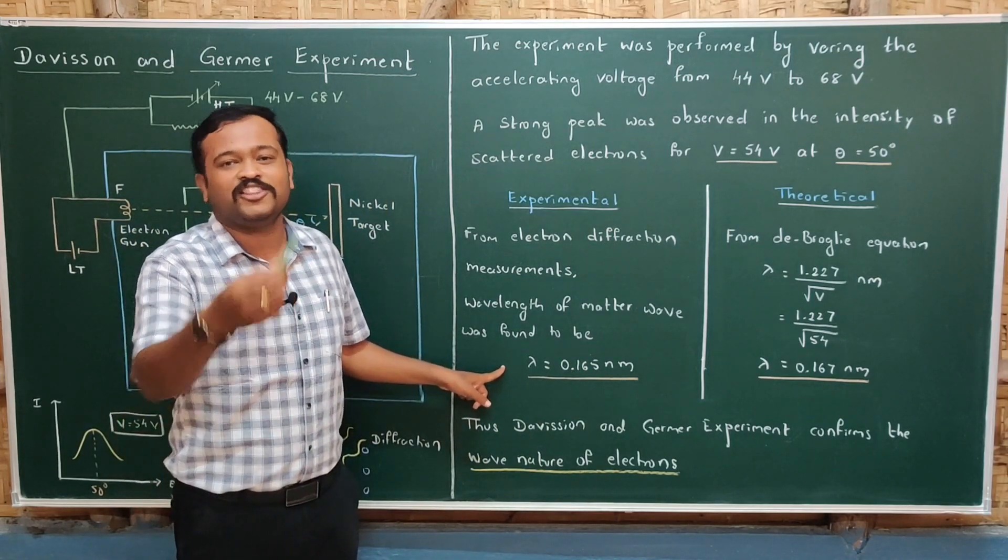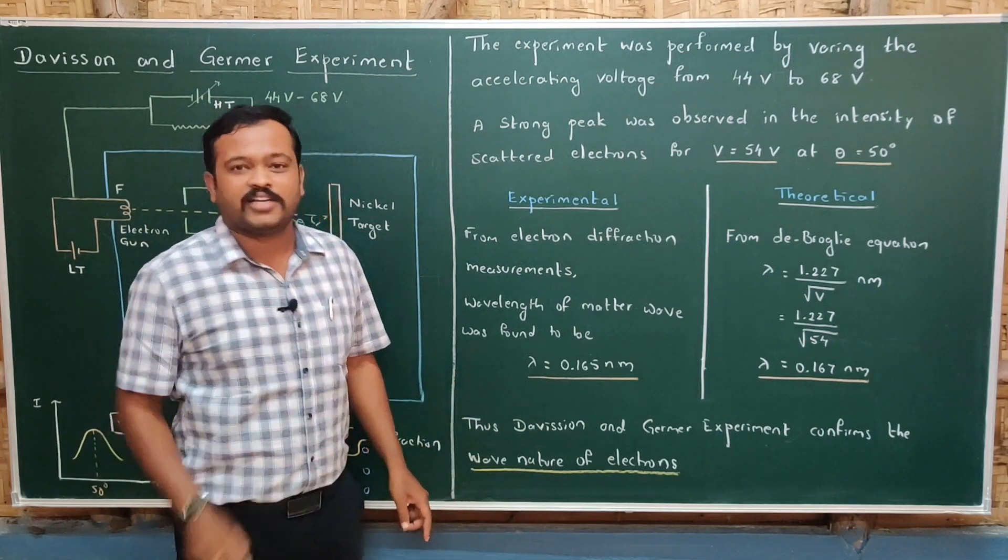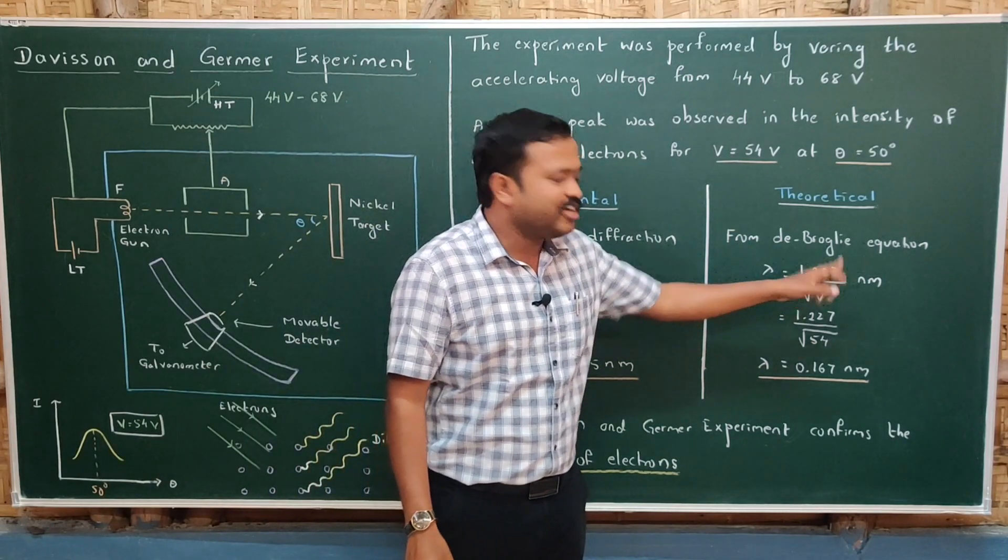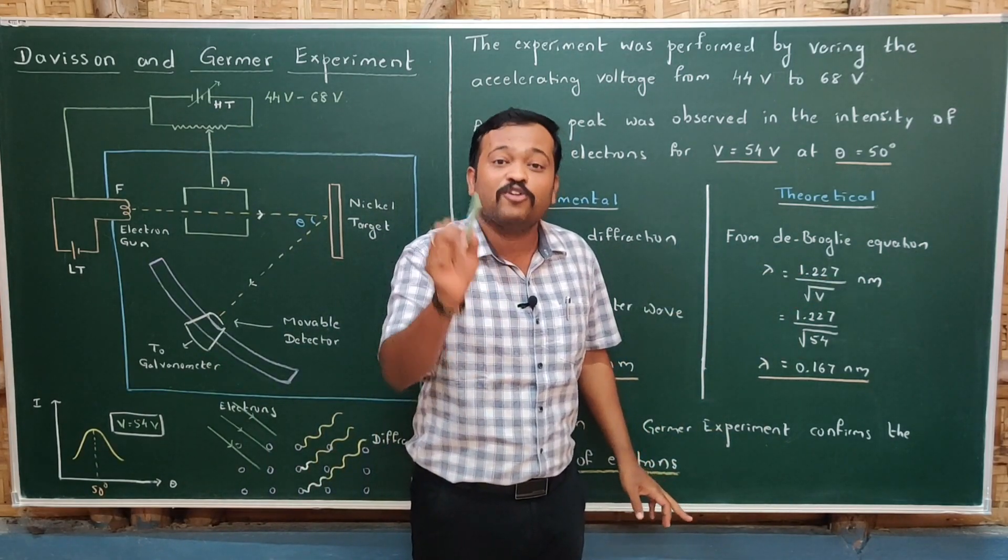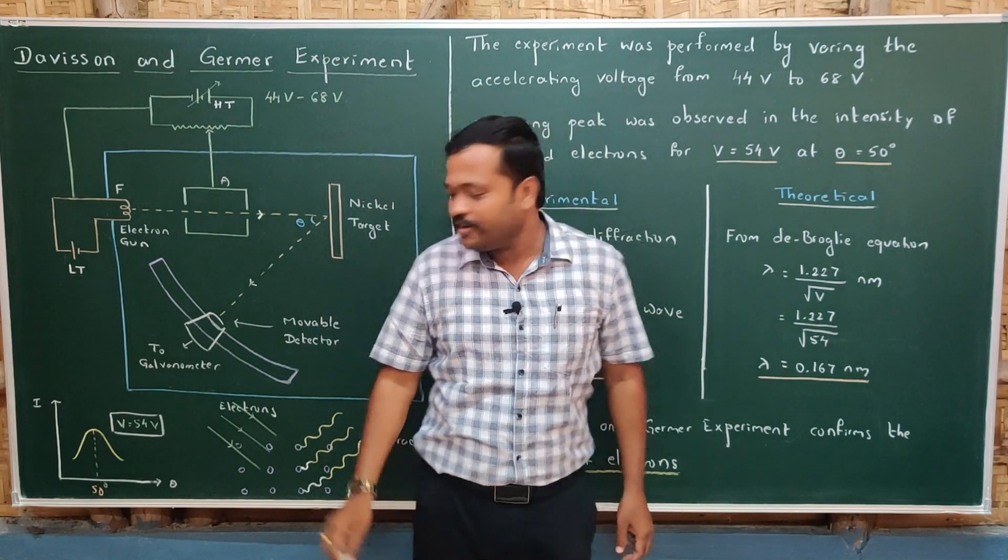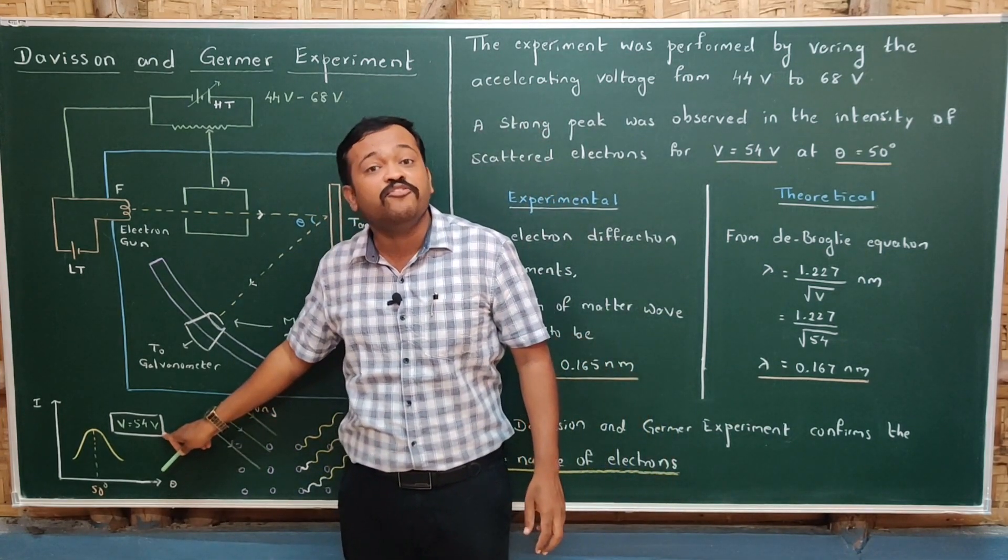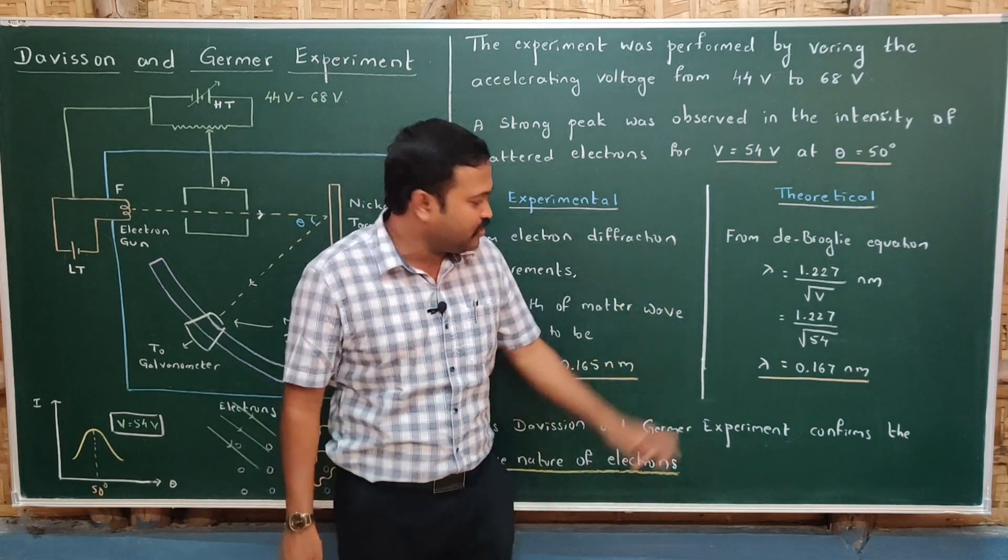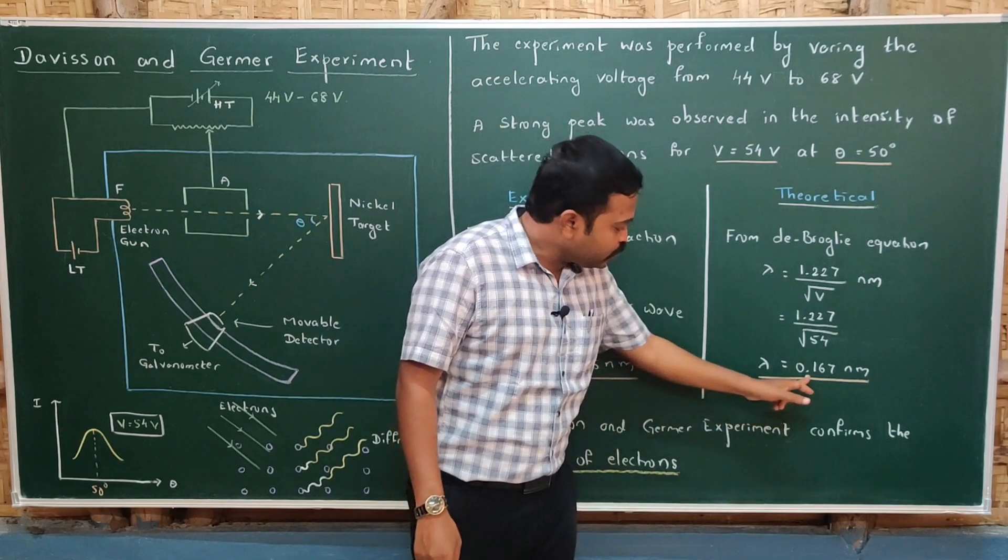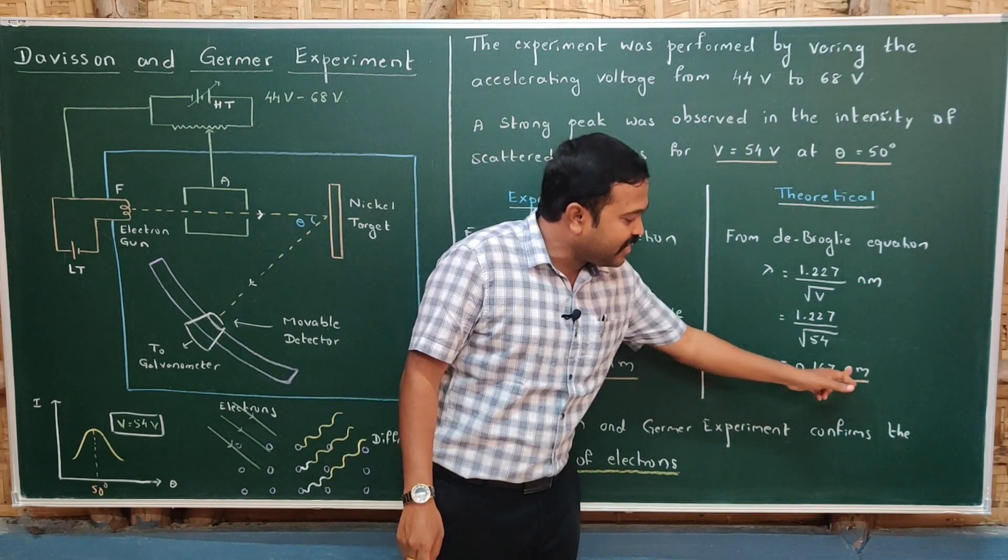Now let us move on to the theoretical value. From De Broglie's hypothesis, the wavelength of matter wave is given by lambda equals 1.227 divided by square root of V, in nanometers. V is the accelerating potential, which is 54 volts. Let us substitute in that equation: 1.227 divided by square root of 54. It came to be 0.167 nanometer.